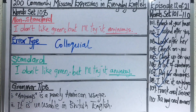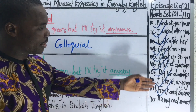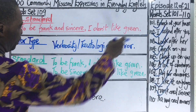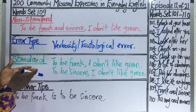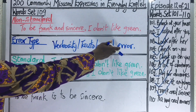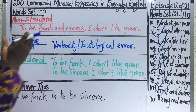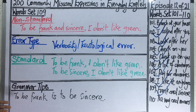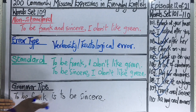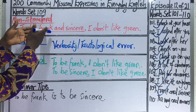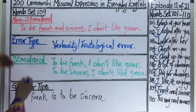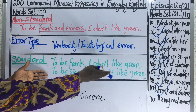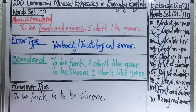We move forward to word set 109: to be frank and sincere, I don't like green — with 'frank and sincere' underlined to indicate verbosity or a tautological error. The expression is verbose because two words that are the same in meaning have been used together. To be frank is to be sincere, so it is unnecessary to use both words in the same expression. Instead, say: to be frank, I don't like green — or: to be sincere, I don't like green.